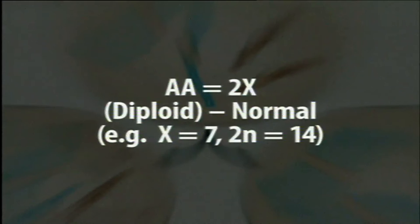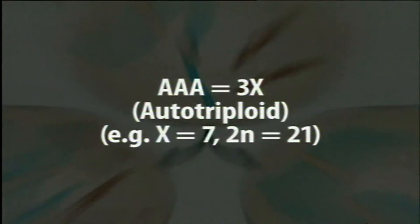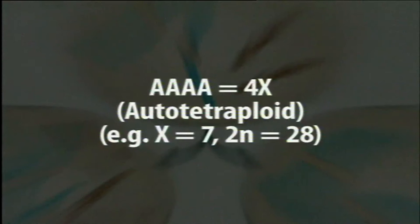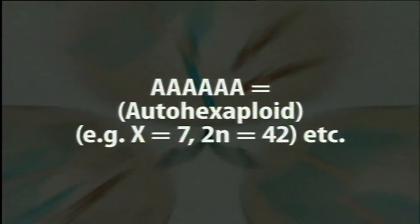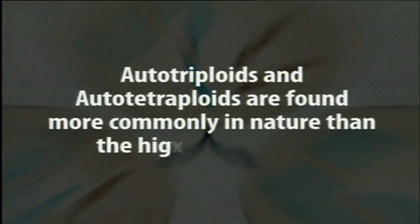To understand autopolyploidy, consider a diploid individual designated as AA with 2n = 14. A series of autopolyploids can be derived: AAA is an autotriploid with 2n = 21; AAAA is an autotetraploid with 2n = 28; and AAAAAA is an autohexaploid with 2n = 42. Among these, autotriploids and autotetraploids are more commonly found in nature compared to autohexaploids or autopentaploids.